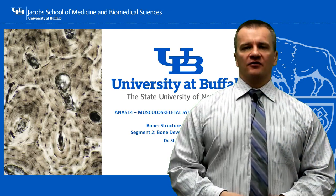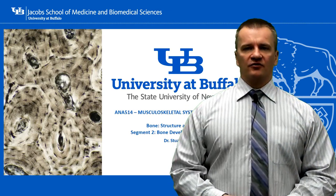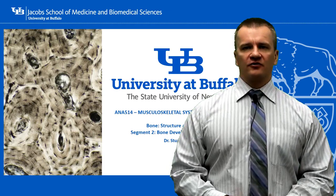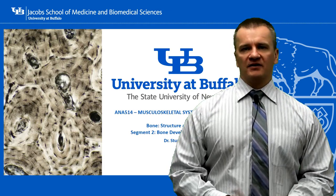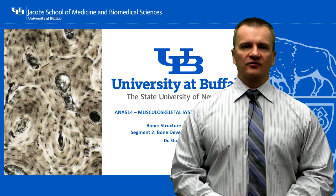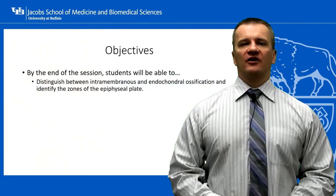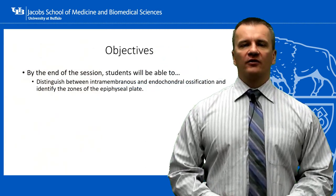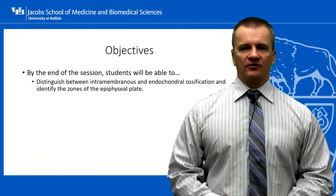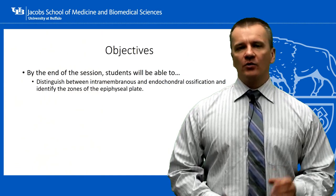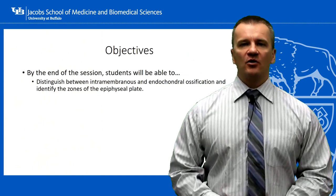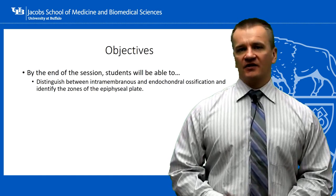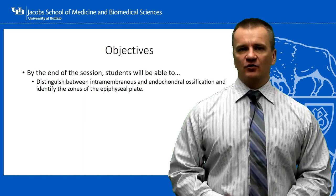Welcome to the second segment in our series on bone tissue. In the first session we looked at the general structure of bone tissue and the cells that maintain the bone matrix. We now focus our attention on the development of bone tissue, which can occur through one of two distinct processes. We will also look at continued bone growth through adolescence, which takes place at the epiphyseal growth plates.